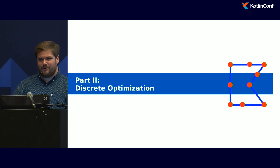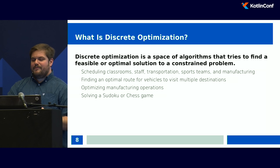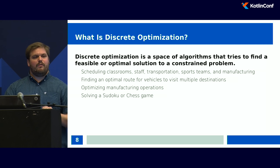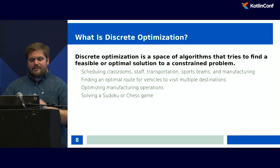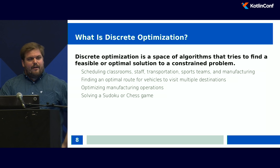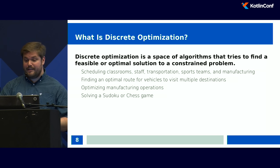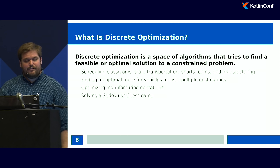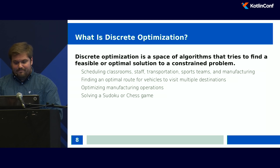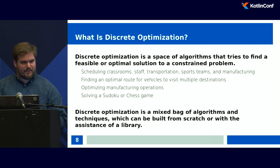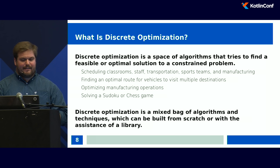We're going to talk about discrete optimization first. This is a space of algorithms that tries to find a feasible or optimal solution to a problem that has constraints on it. Problems such as scheduling, classrooms, staff, transportation, even sports teams and tournaments, as well as manufacturing. It can also be used for vehicle routing or optimizing the path within a warehouse for a stock picker. You can also use it for optimizing ride-sharing services, manufacturing operations, or even Sudoku and chess AI. Discrete optimization is a mixed bag of algorithms and techniques — you can build these from scratch or with the assistance of a library.